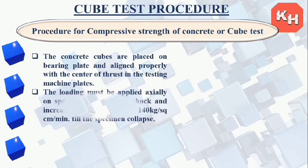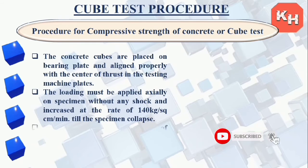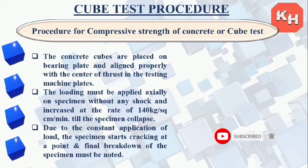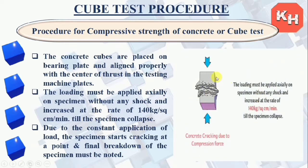The concrete cubes are placed on the bearing plate and aligned properly with the center of thrust in the testing machine plates. Loading must be applied axially on the specimen without any shock, increased at the rate of 140 kg/cm² per minute until the specimen collapses. Due to the constant application of load, the specimen starts cracking, and the final breakdown reading is noted.